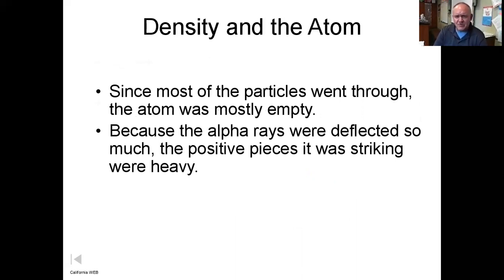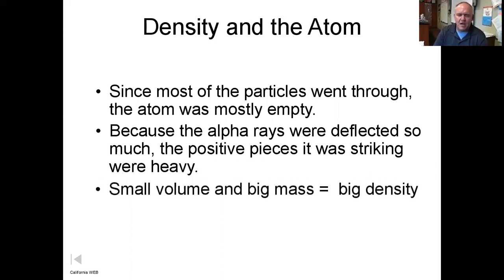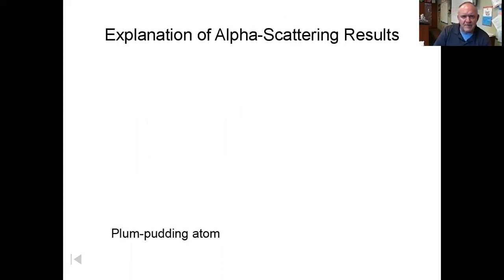They figured out that since most of the particles went through, the atom had to be mostly empty. But every once in a while there had to be something hard enough and heavy enough in the center to cause deflection. It had to be small and heavy — very dense. They gave this dense little piece the name nucleus.